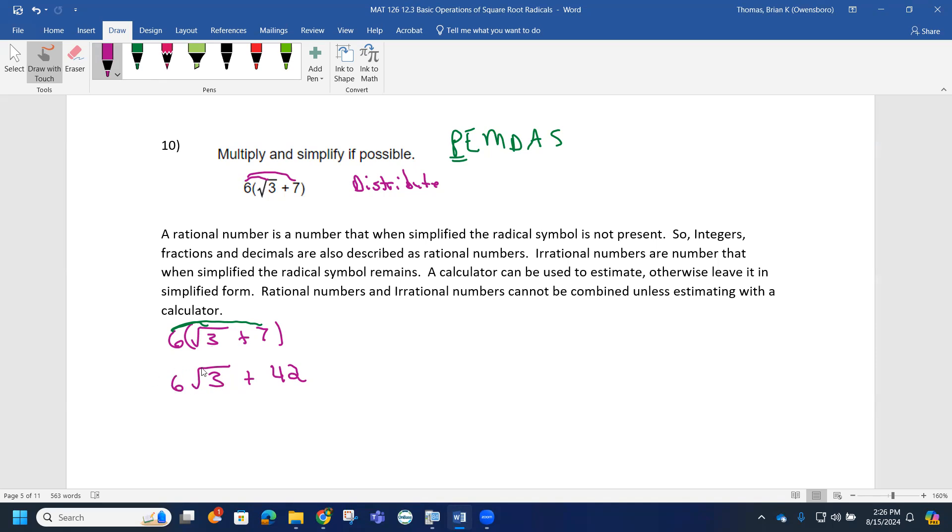This is what they mean by simplified - in this case it's multiplied and simplified. That's all we can do in that problem. Notice how again the six cannot go to the three because the three is inside the radical and the six is not.